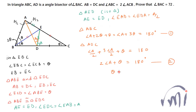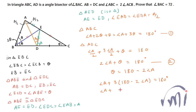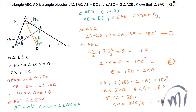From equation 2, theta equals 180 minus 2A. Substituting into equation 1: A plus 3(180 minus 2A) equals 180, so A plus 540 minus 6A equals 180, giving 5A equals 360, therefore angle A equals 72 degrees. So we get the value of angle A as 72 degrees.